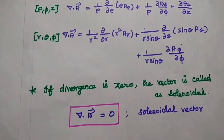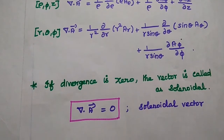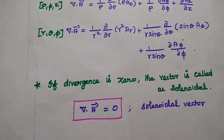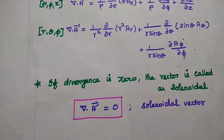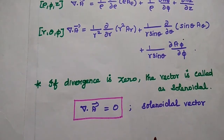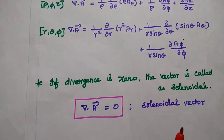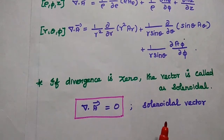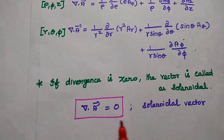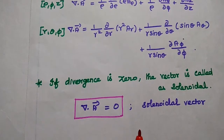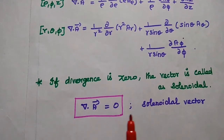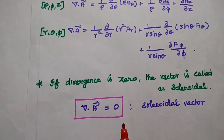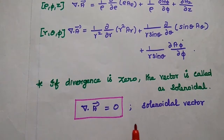One more important condition: if the divergence is 0, then the vector is said to be a solenoidal vector. For a vector to be solenoidal, its divergence must equal 0. This is also an important condition in divergence.